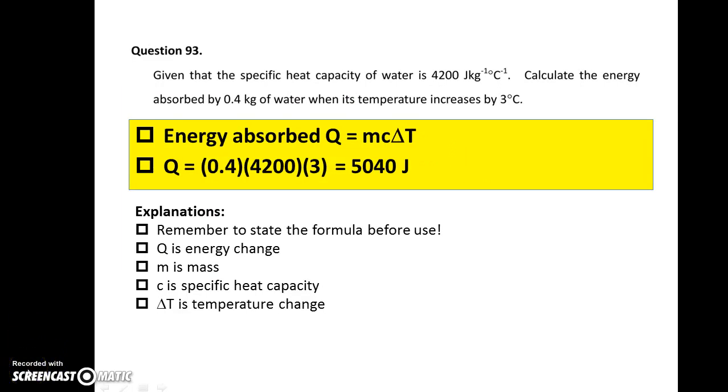Question 93. Calculate the energy absorbed by 0.4 kg of water when its temperature increases by 3 degrees Celsius. You may apply the equation Q equals mc delta T. Substitute all the values. You may find the answer.